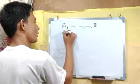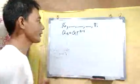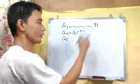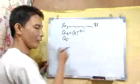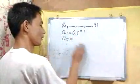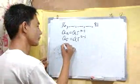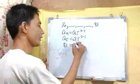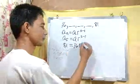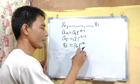We rewrite our formula: a sub n equals a sub 1 times r to the power of n minus 1. Our a sub n is a sub 5, since there are 5 terms after inserting 3 terms between 16 and 81. So a sub 5 equals 81, giving us: 81 equals 16 times r to the power of 4, since 5 minus 1 equals 4.